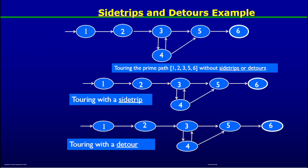Let's look at examples. Suppose we have a prime path going along nodes 1→2→3→5→6, and a test path t that also goes 1→2→3→5→6. This test path is touring the prime path without any side trip or detour, because it never left the prime path at any node — it remained along the prime path all the way through.